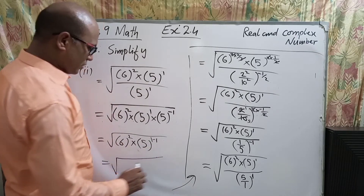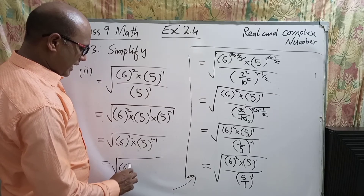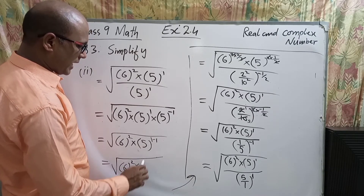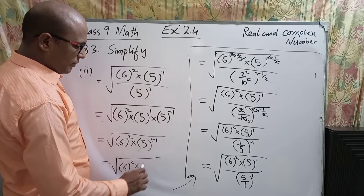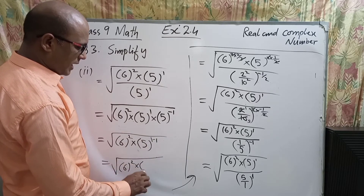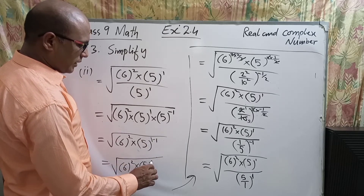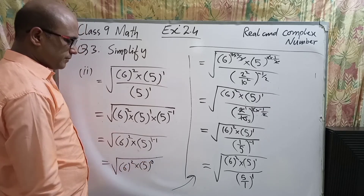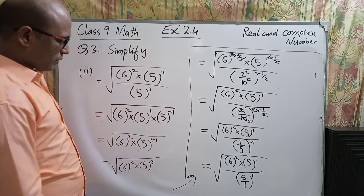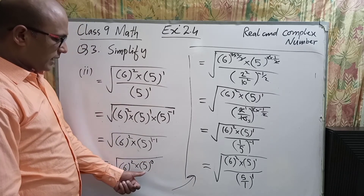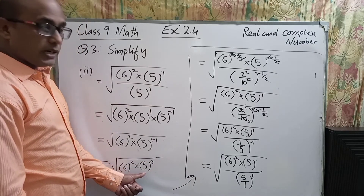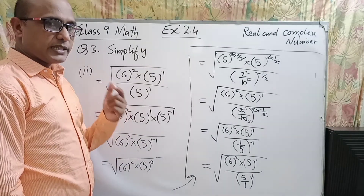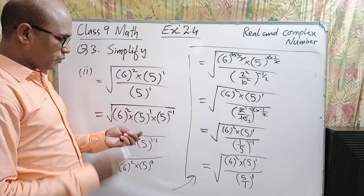6 power 2 remains the same, and for number 5: 1 minus 1 equals 0. Any number with power 0 is equal to 1.